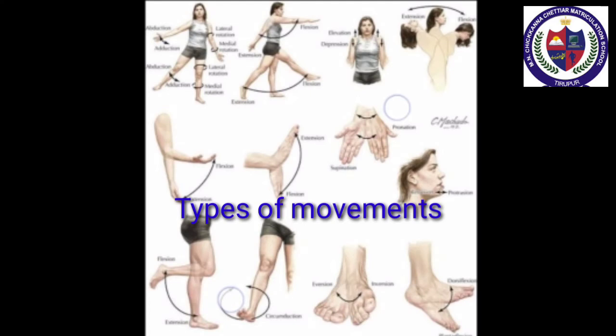Movements in the human body: our body is made up of a framework of bones called the skeleton, which helps in the movement of the body. Some of the movements in body parts of humans are: movement of eyelids, movement of the heart muscle, movement of teeth and jaw, movement of arms and legs, movements of the head, and movements of the neck.